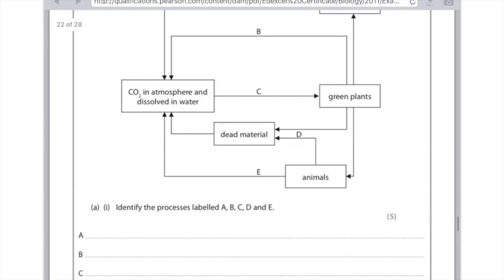C, CO2 in the atmosphere and dissolved in water. The arrow is going from that label to green plants. So it means that the green plants are absorbing CO2. How do they do that? It's by photosynthesis. So that's the answer to C.